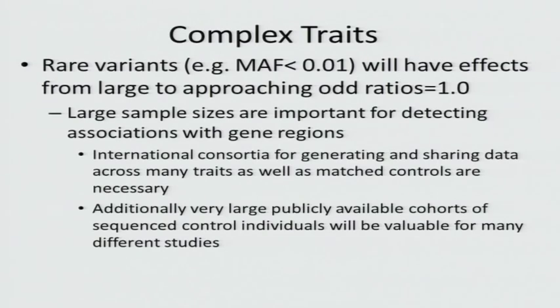Because we need such large sample sizes, it's really very important that we have international consortia that will be able to share data, not only on the traits—either qualitative or quantitative—but also control data. That's really going to be the only way we'll be able to approach the sample sizes large enough to detect association. Additionally, it will be very important to have publicly available cohorts available for investigators.